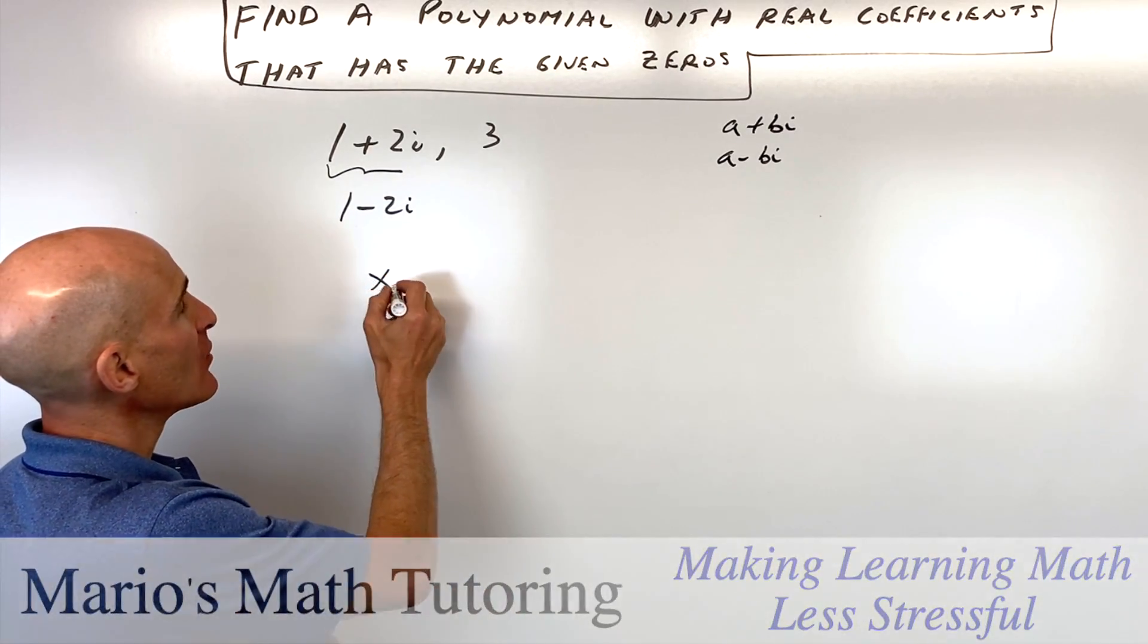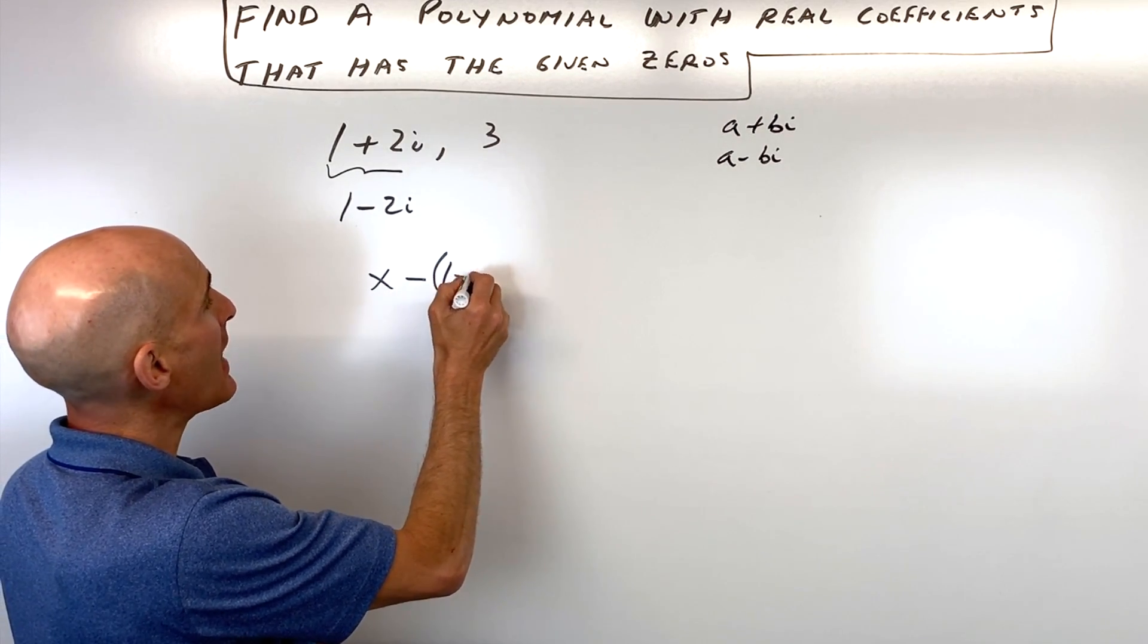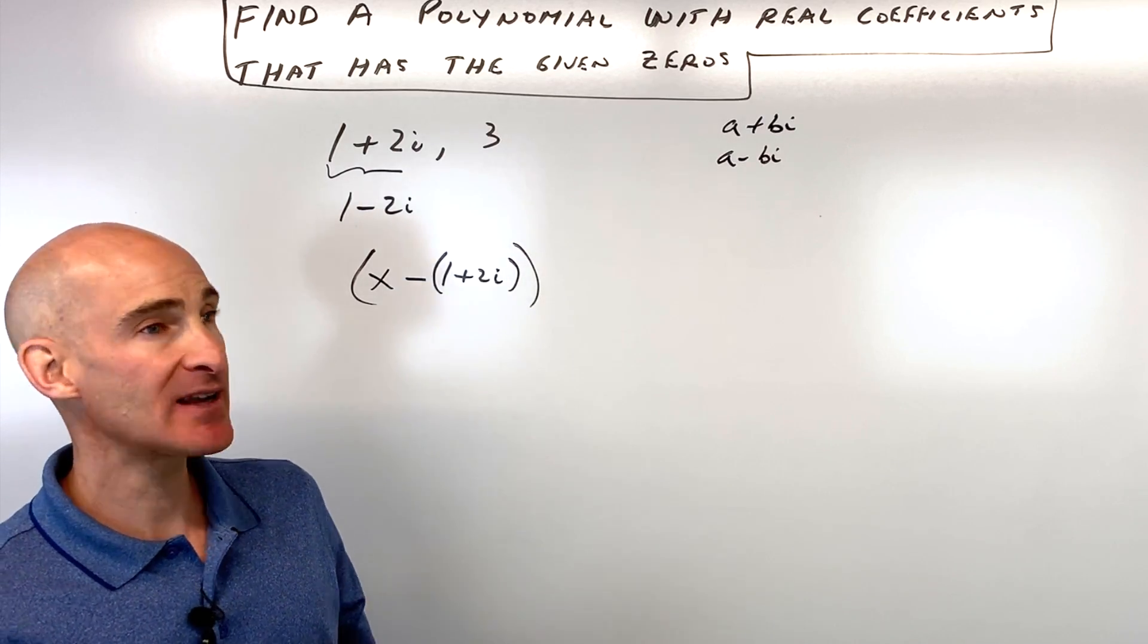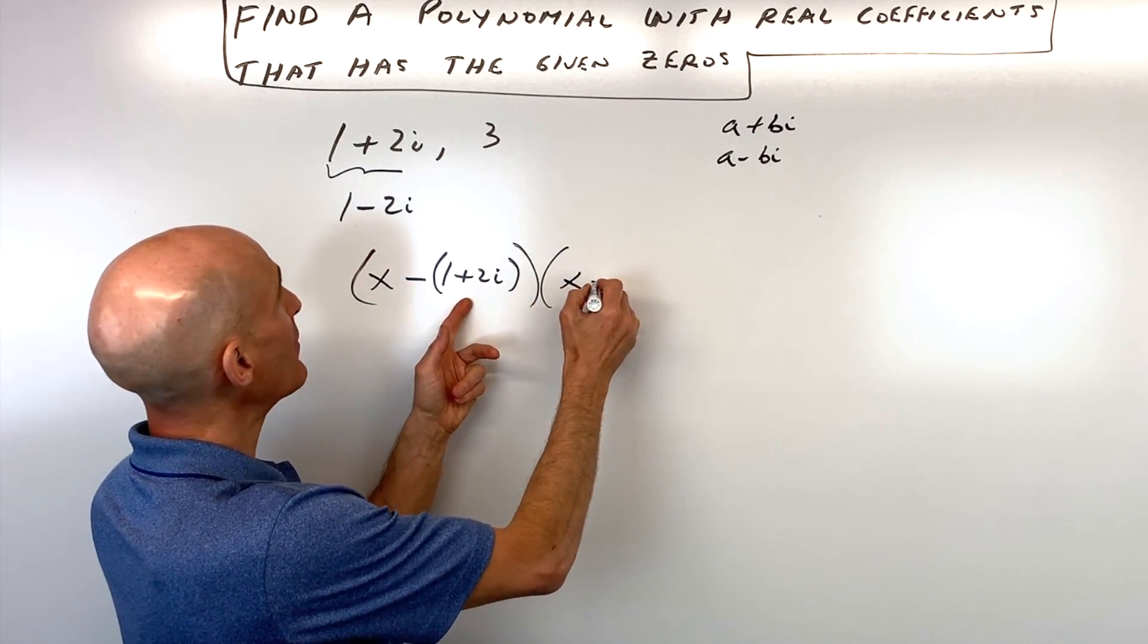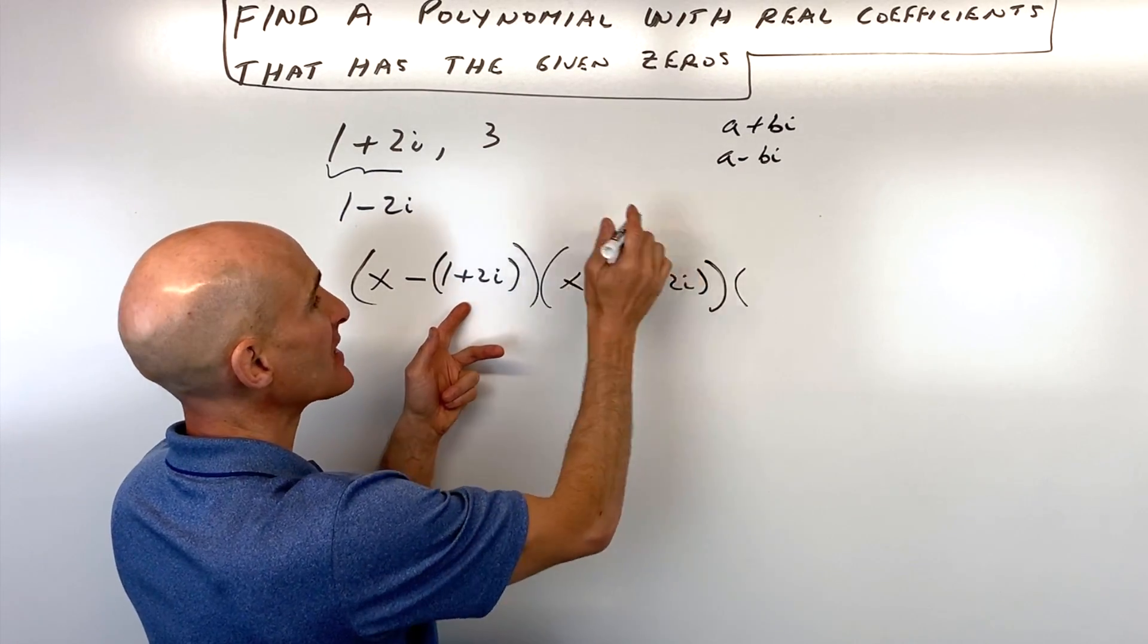The other thing to realize is that when one plus two i is a zero, x minus one plus two i is a factor. So you always have x minus these zeros as factors. So we have x minus one plus two i, we have x minus one minus two i, and we have x minus three.